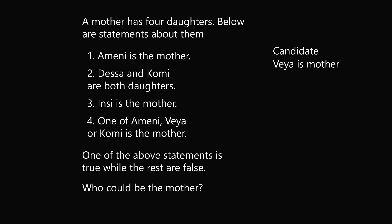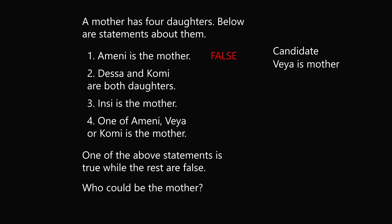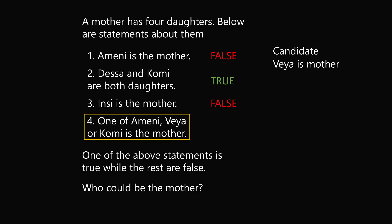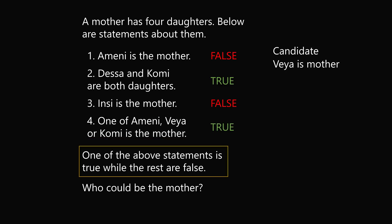We now consider the case that Veya is the mother. Statement 1, that A-meni is the mother, would be false. Statement 2, that Dessa and Komi are both daughters, would be true, since both would be daughters if Veya is the mother. Statement 3, that Insi is the mother, would be false. And statement 4 — one of A-meni, Veya, or Komi is the mother — would also be true. But now statements 2 and 4 are both true, and only one can be true. So we've derived a contradiction — Veya cannot be the mother.